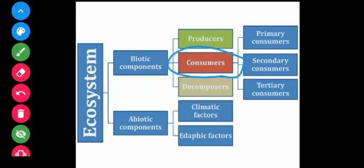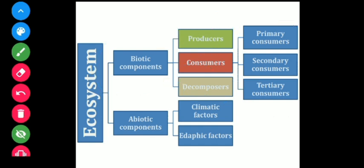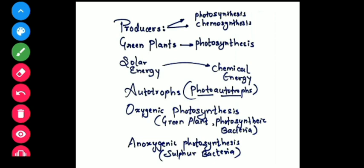The consumers have again been categorized into three groups: primary, secondary, and tertiary. Coming to the producers — the first group of biotic components — basically the green plants are considered as producers as they prepare carbohydrates through the process of photosynthesis.